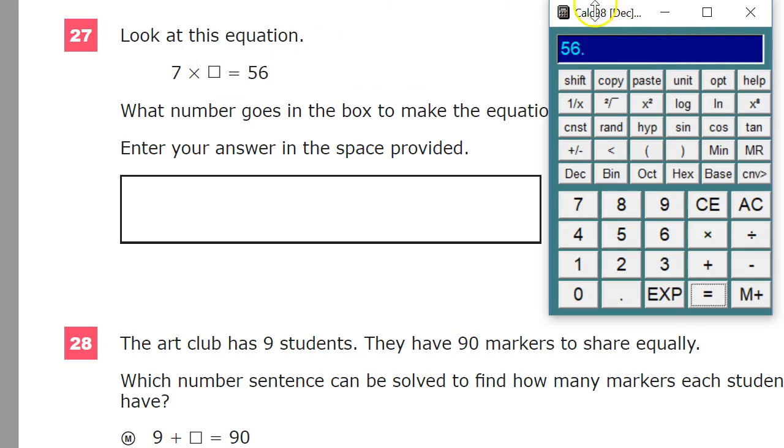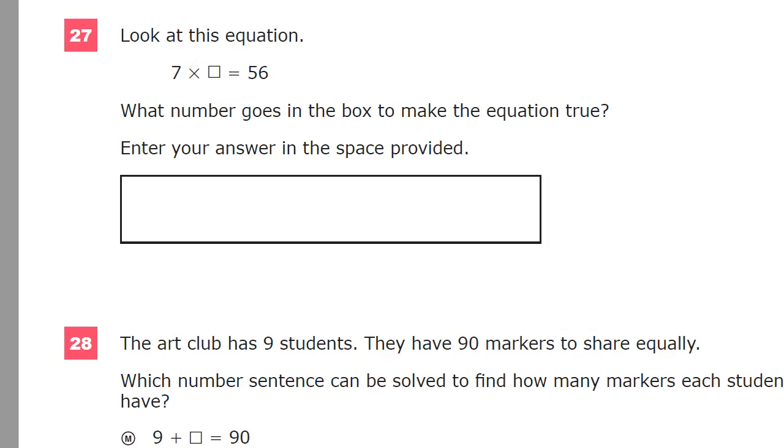Another way to check is to think, well, it is a multiplication problem, so what is the opposite operation for multiplication? It's division, right? So we'll use that pairing operation there and just do 56 divided by 7. And that can give us the answer that we want.